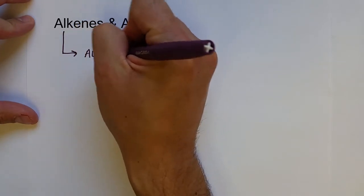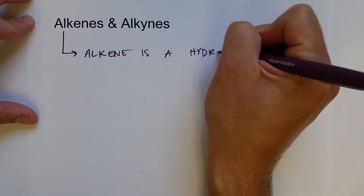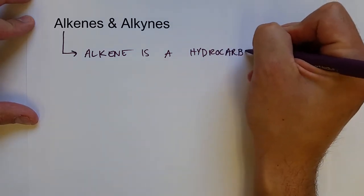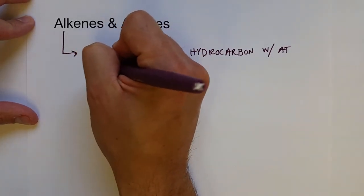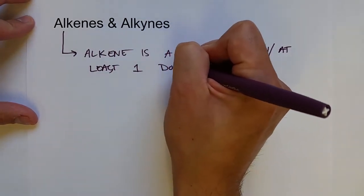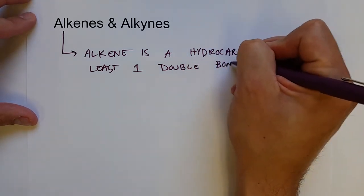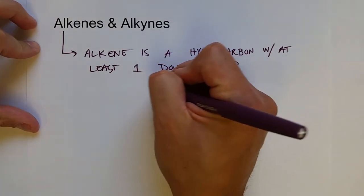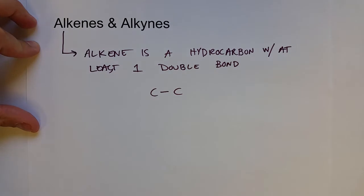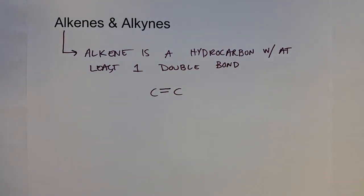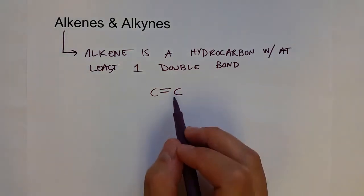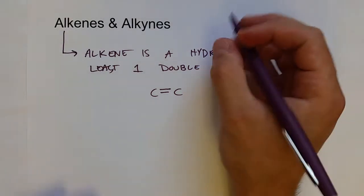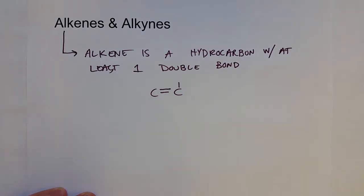An alkene is a hydrocarbon with at least one double bond. The first hydrocarbon that can contain a double bond is not methane — it's actually ethene. So instead of a single bond between the two carbons, it forms a double bond, turning it from an alkane into an alkene. Each carbon still needs four bonds, so with a double bond between the two carbons, it only needs to bond to two hydrogens.